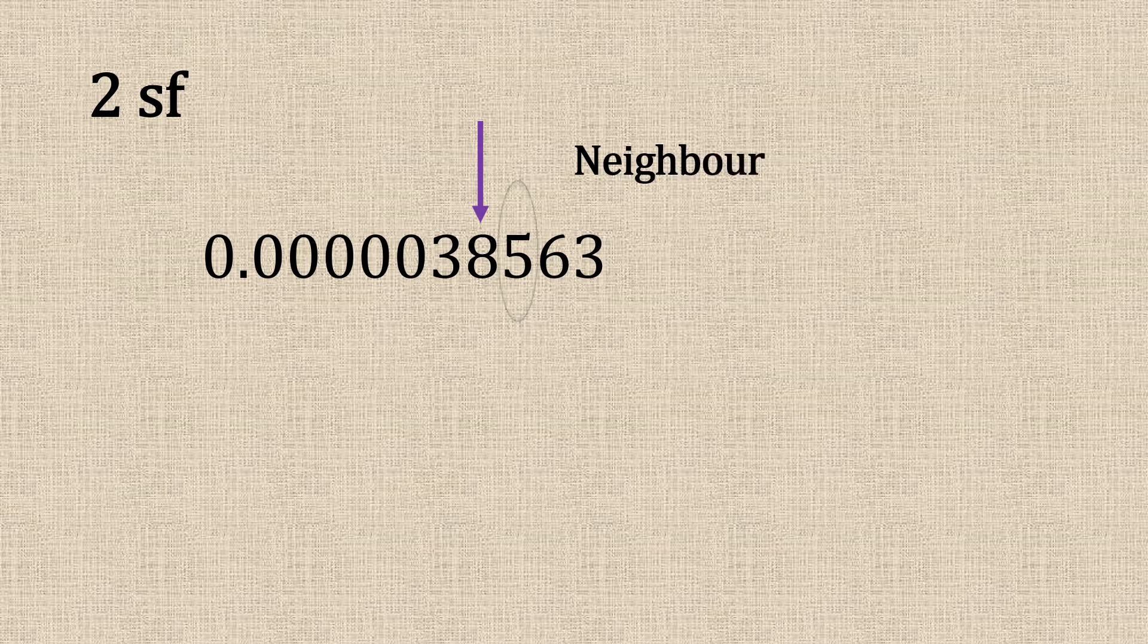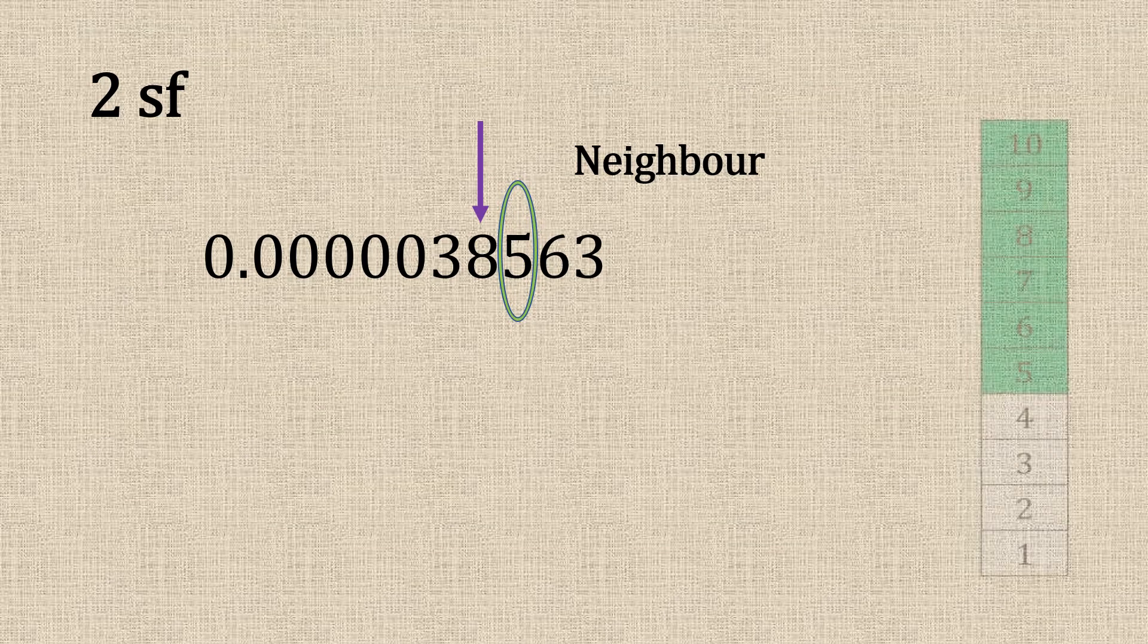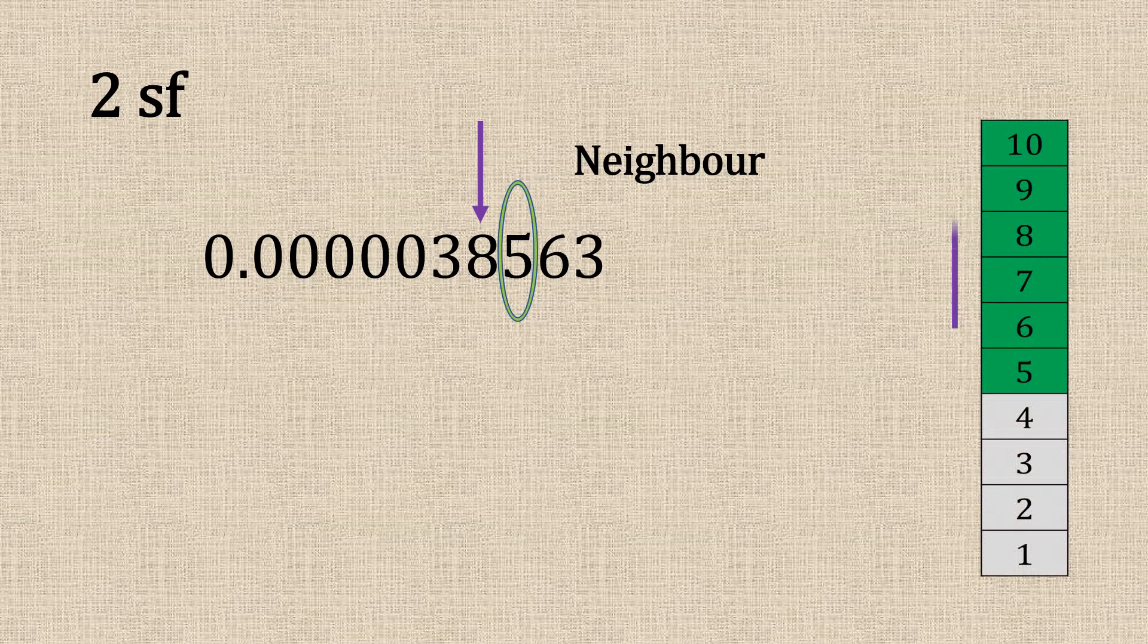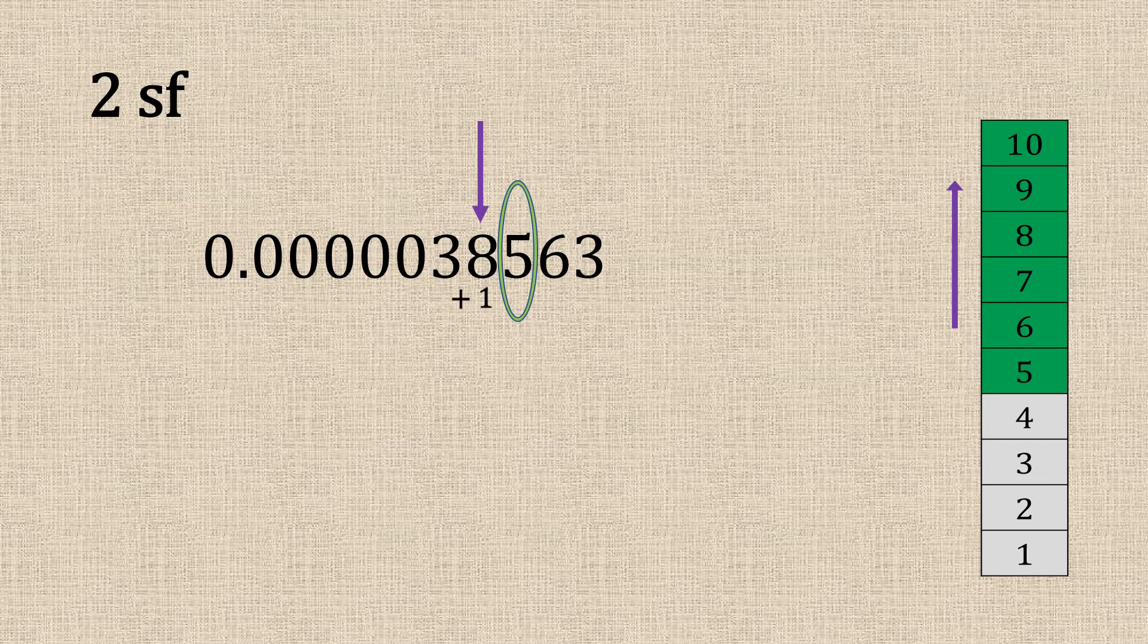Two significant figures. As you can see, all those zeros, we don't count them. They're at the front. So eight is our second significant figure. We look at the neighbour. It's a five. Five is high. Add one. There we go.